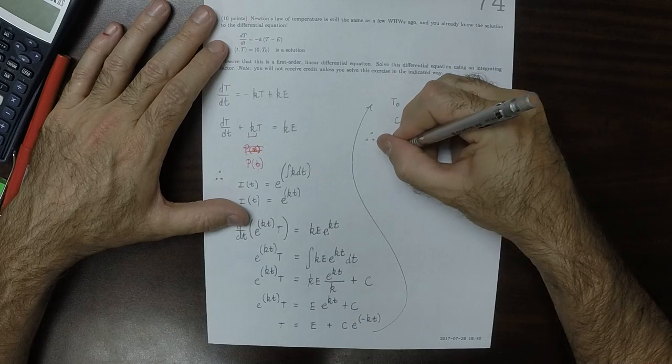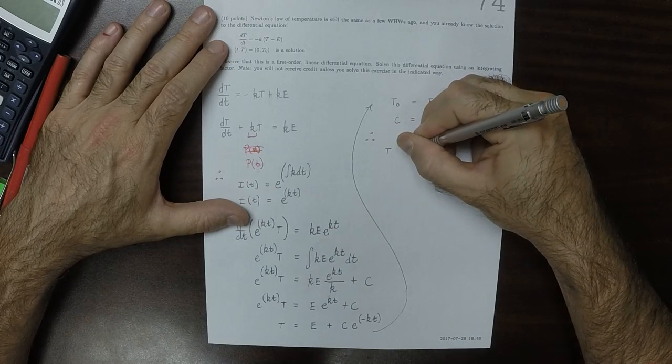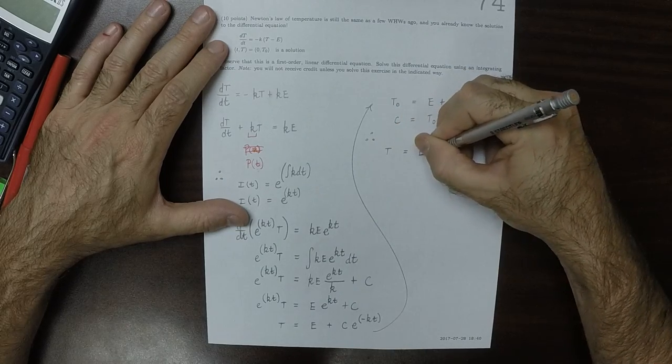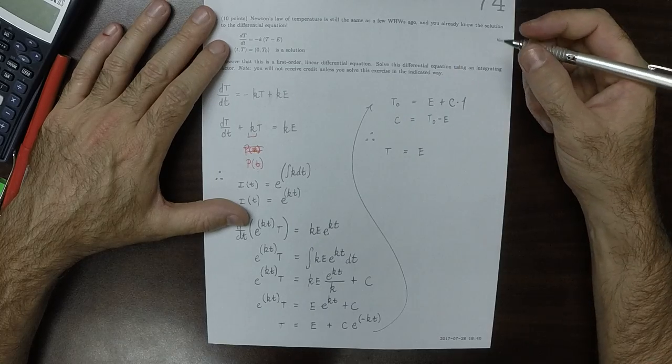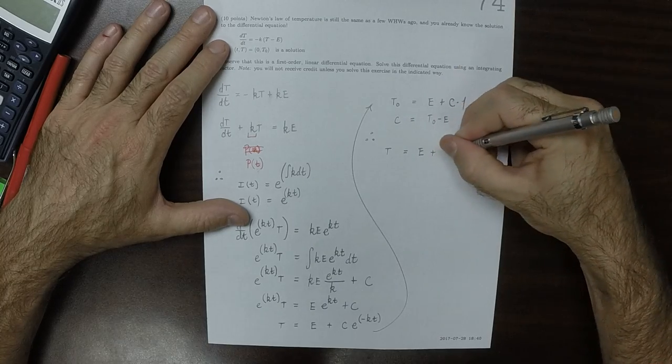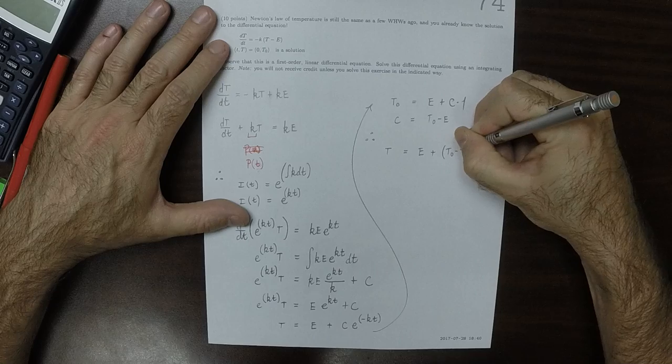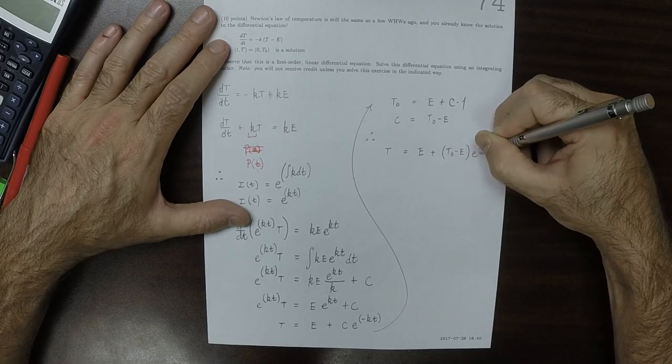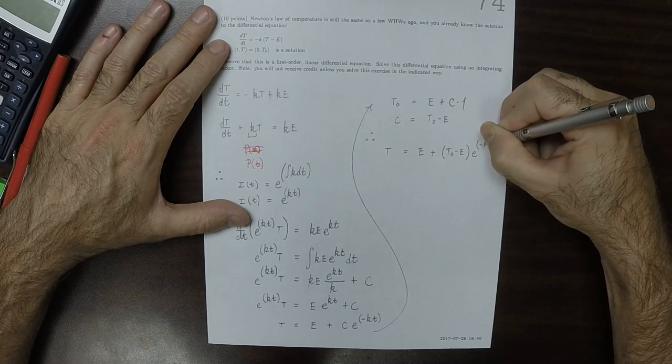Therefore, plugging that in, the temperature big T is the environmental temperature plus T zero minus E exponential negative K T.